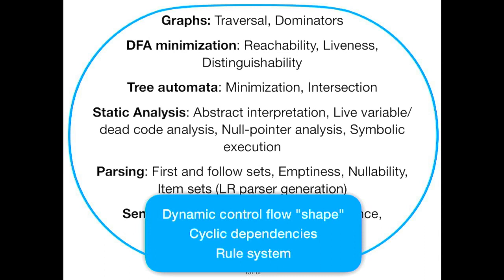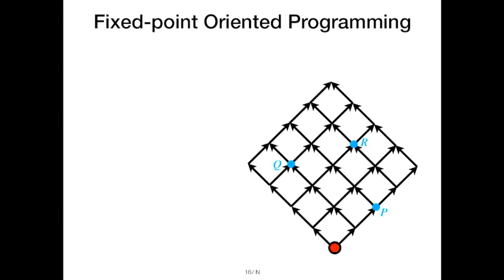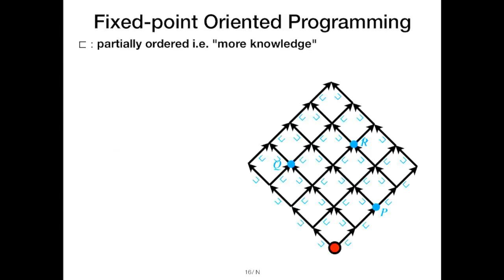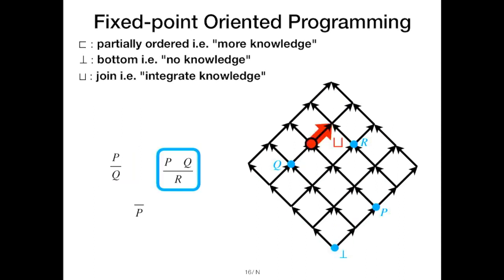I'll briefly introduce what I mean by fixed point in fixed-point-oriented programming. We're working over a bounded semi-lattice of knowledge, moving up this lattice and using inference rules to join our current knowledge with new knowledge as we infer it. We keep going up the lattice as much as possible using our rules, and eventually we reach a point where we can't learn anything more — that's an abstract description of what I mean by these fixed-point computations.